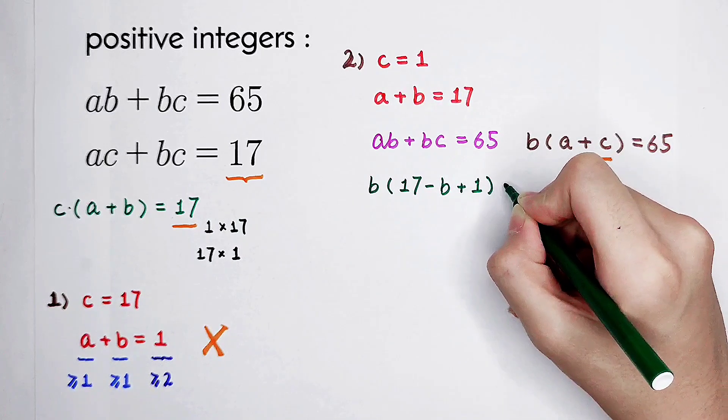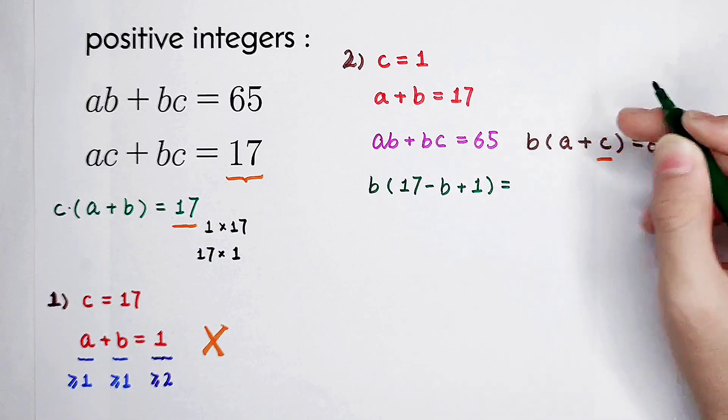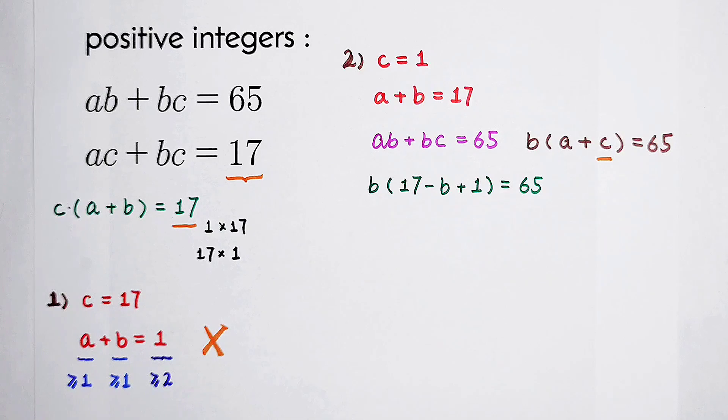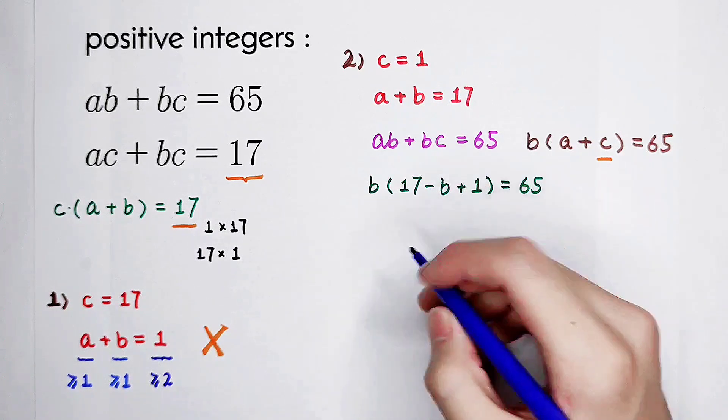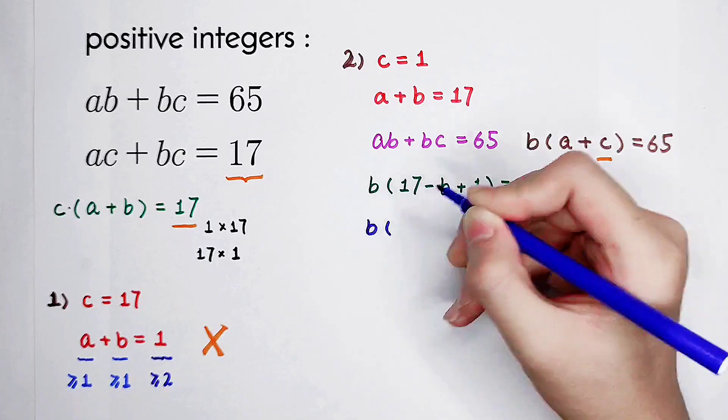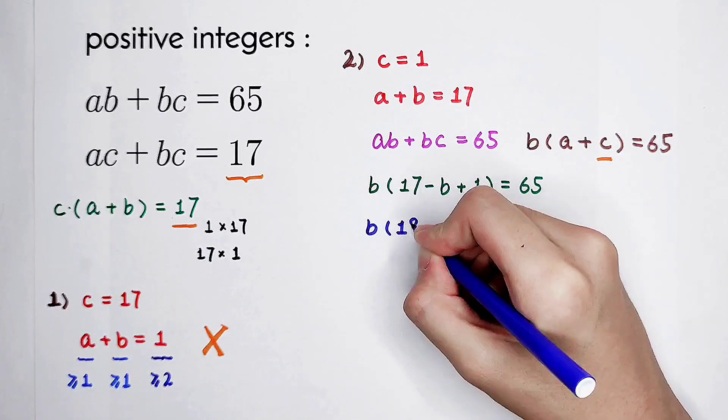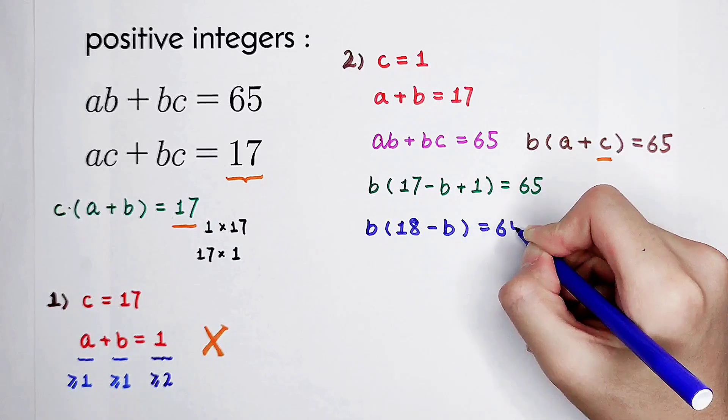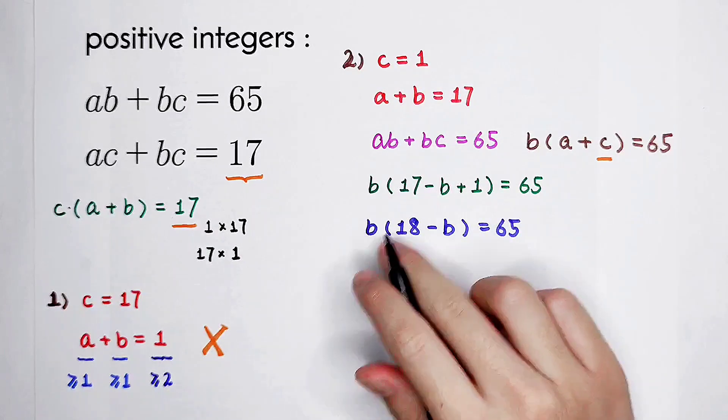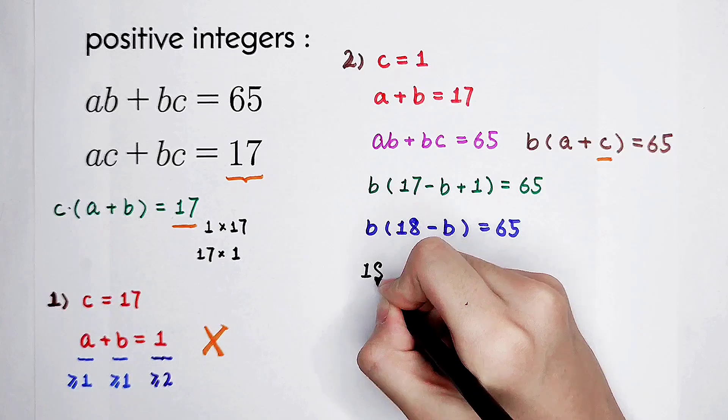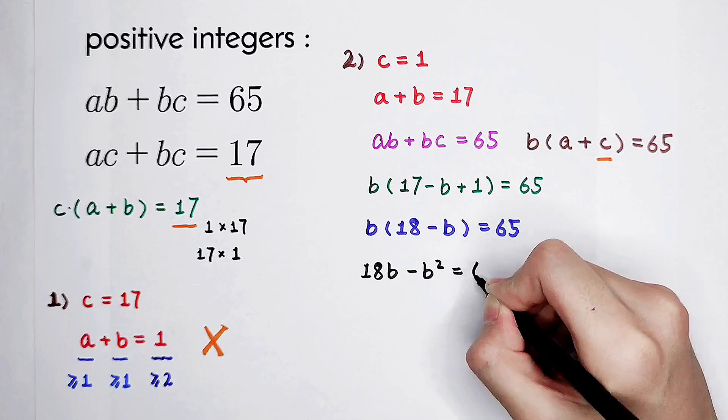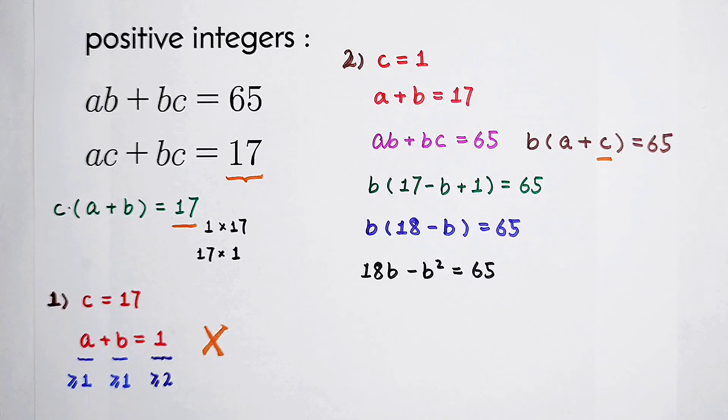So this equation is just a quadratic equation about b. Now we should simplify this term in the bracket. b times 18 minus b is equal to 65. And then 18b minus b squared is 65. And we can simplify it, of course.